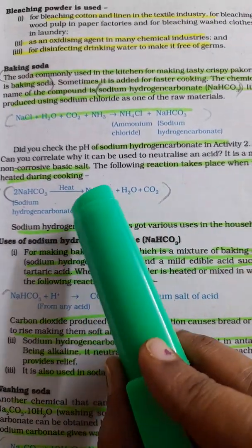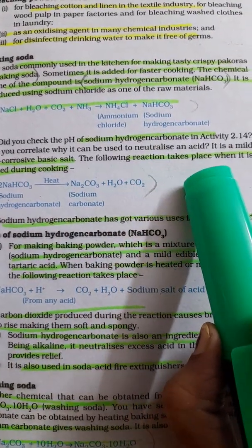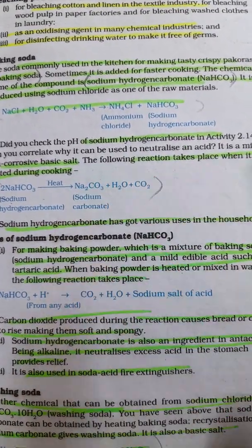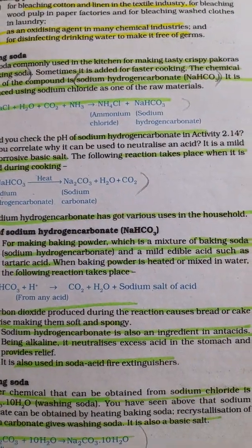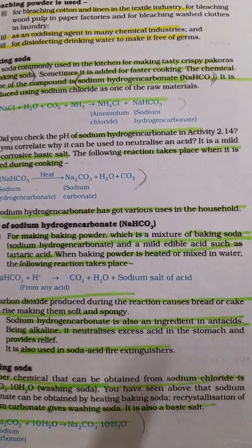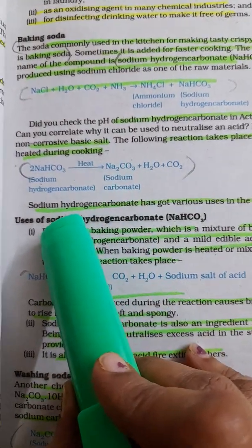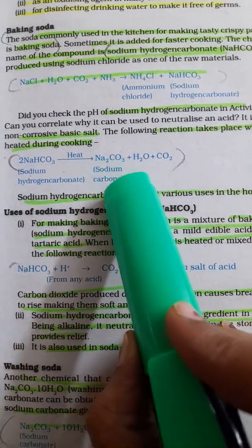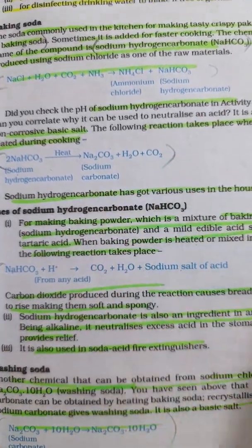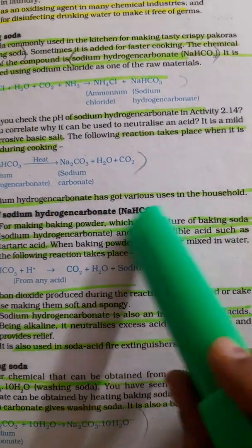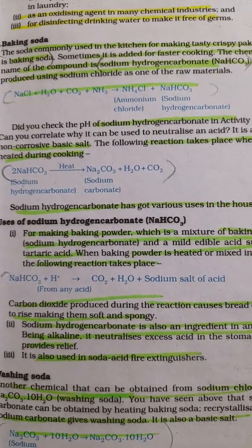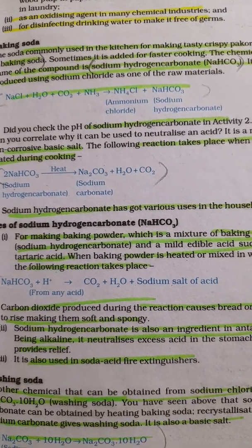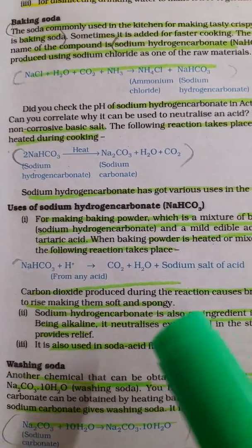Sodium hydrogen carbonate is used to neutralize an acid because it is a mild, non-corrosive base. We use bases to neutralize the effect of acids. When sodium hydrogen carbonate (NaHCO3) is heated during cooking, you get sodium carbonate, water, and CO2. When CO2 gas is produced, it makes the snacks crispier and tastier.